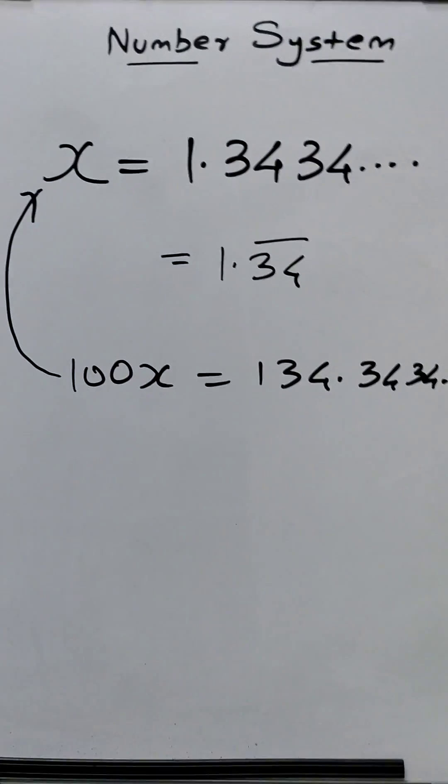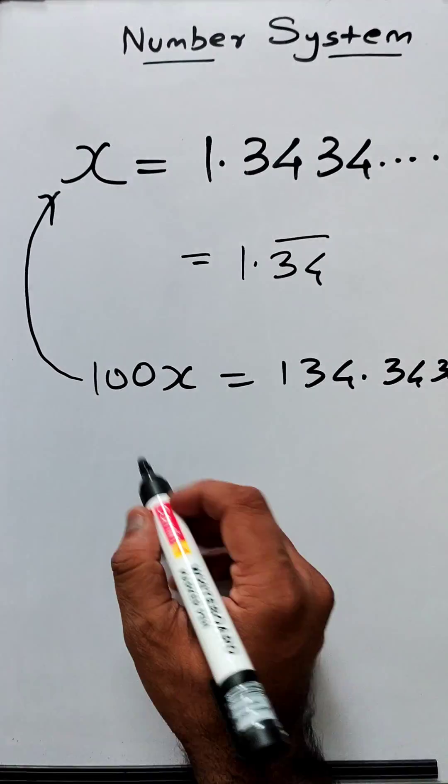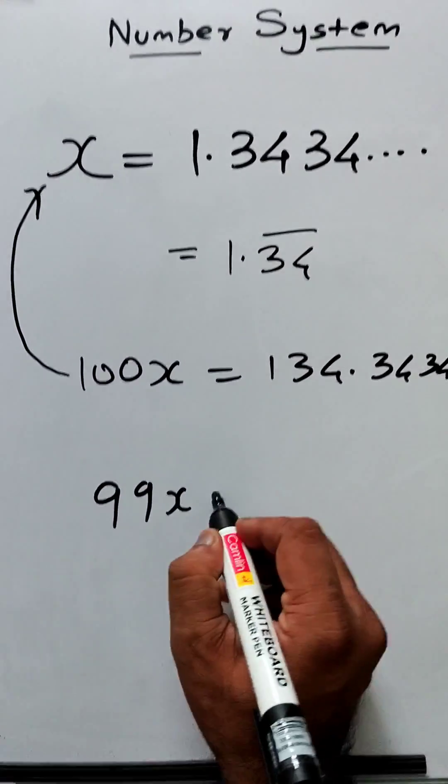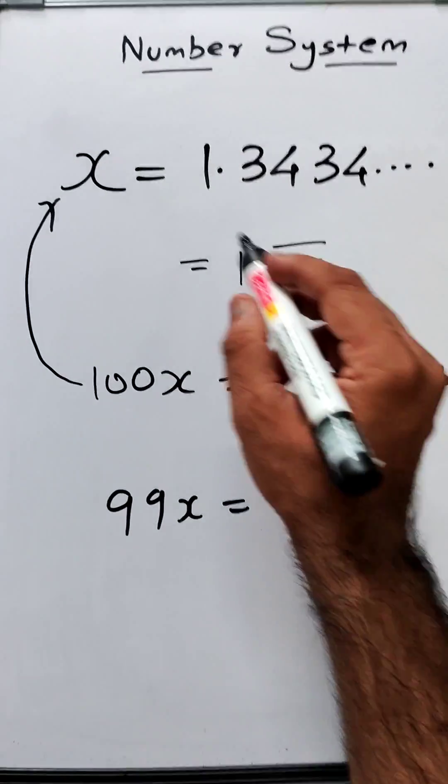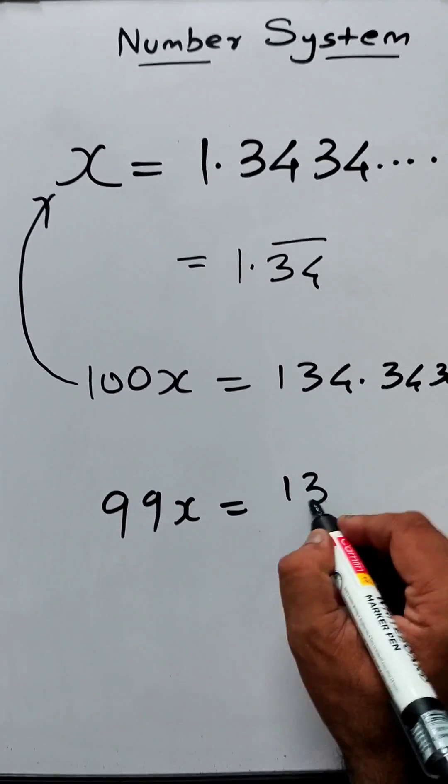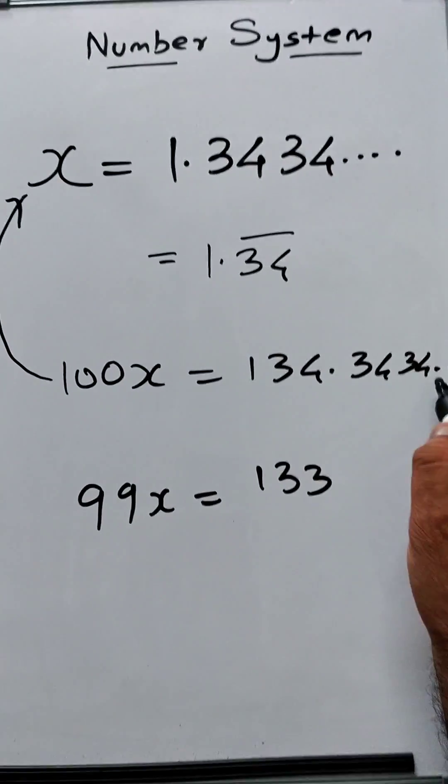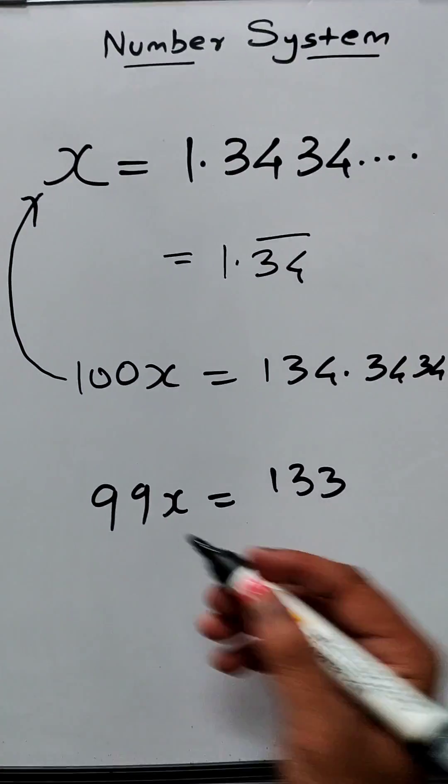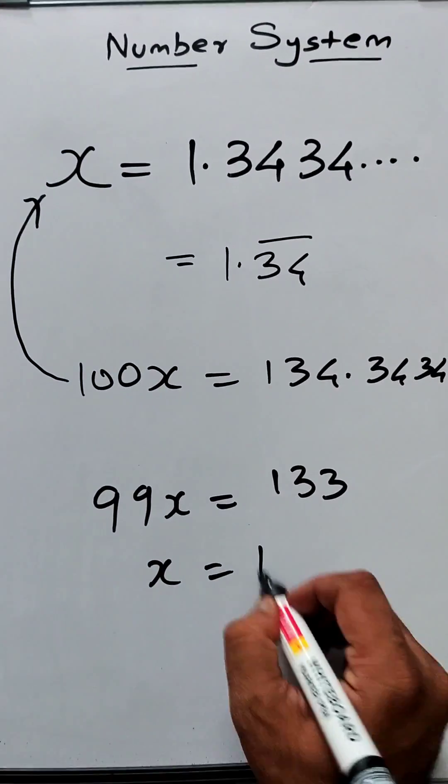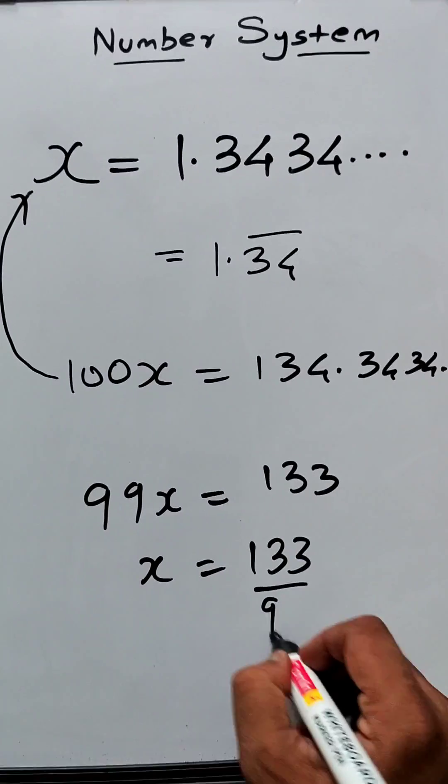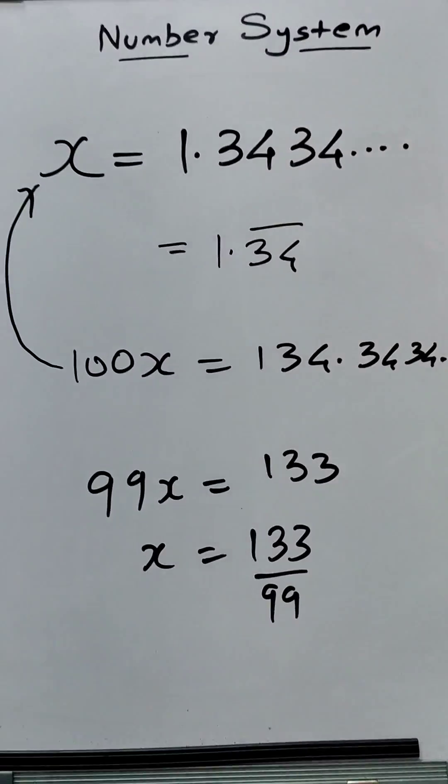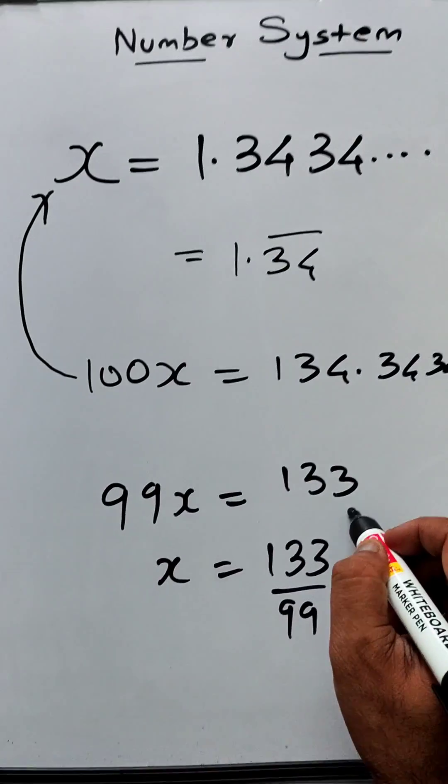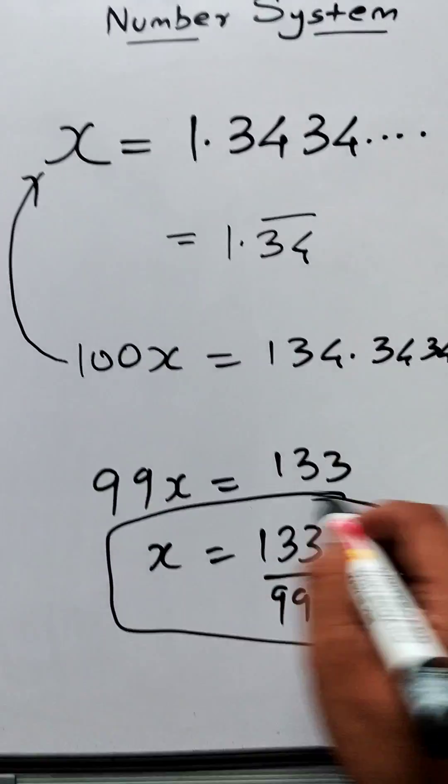If I do that, I'll get 100x minus x, that is 99x equals 134 minus 1 is 133. As you can see, .343434... after the decimal point will get cancelled out. The value of x is nothing but 133/99, which is a rational number. It is an improper rational number.